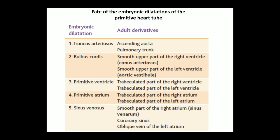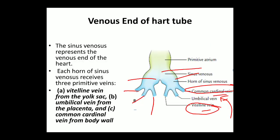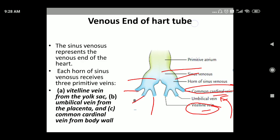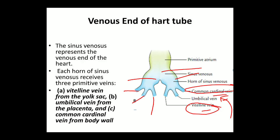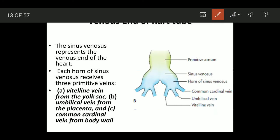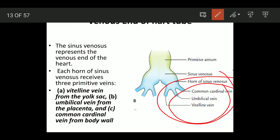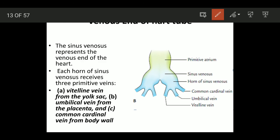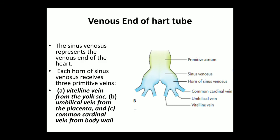The sinus venosus has a body and the right horn, both of which will get absorbed into the right atrium. The left horn will degenerate and disappear, with only the remnant remaining as the coronary sinus. So the remnant of the left horn is the coronary sinus, and the right horn with the body gets absorbed into the right atrium.